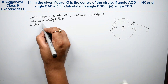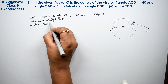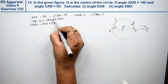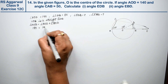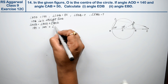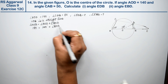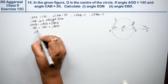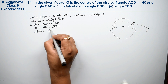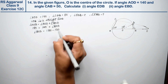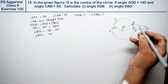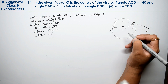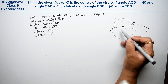Since AOB is a straight line, angle AOB equals angle AOD plus angle BOD, which equals 180 degrees. Angle AOD is given as 140 degrees, so angle BOD = 180 minus 140 = 40 degrees.